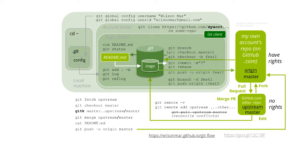This illustrates the basic git commands for using git to interact with GitHub repositories. Here we have a stranger's repository in GitHub which we have no right to edit. But if you fork it into your own GitHub account, you would then have rights to change it.